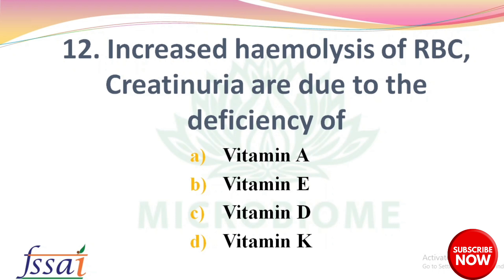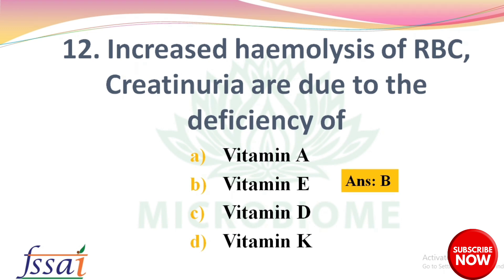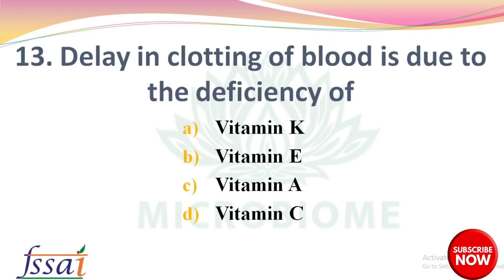Next question: increased hemolysis of RBC and creatinuria are due to the deficiency of — options: vitamin A, vitamin E, vitamin D, vitamin K. The right answer is option B, vitamin E. Next, delay in clotting of blood is due to the deficiency of — options: vitamin K, vitamin E, vitamin A, vitamin C. The right answer is vitamin K.